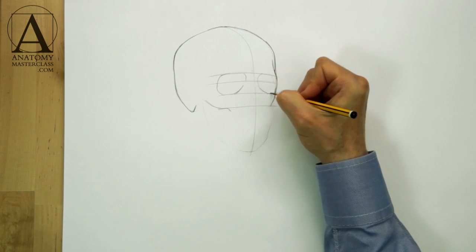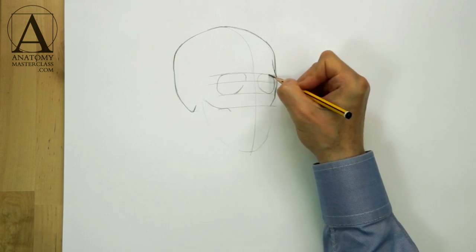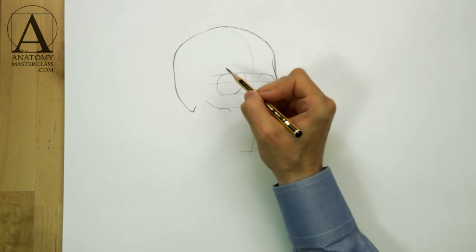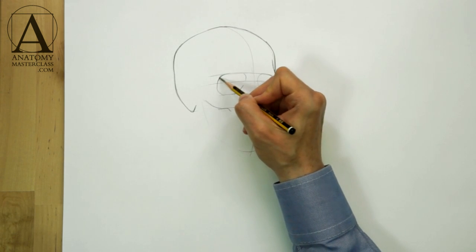The eye socket further from the viewer is foreshortened and therefore appears to be slightly smaller than the one that is closer to us.